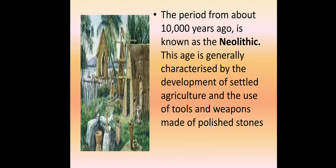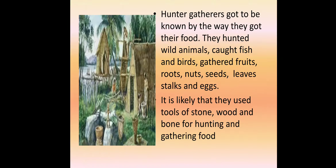The wheel was also later used for generating water. Development was taking place during the Neolithic period, and we can say this was the most advanced period. Hunter-gatherers got their food by hunting wild animals, catching fish and birds, and gathering fruits, roots, nuts, seeds, leaves, stalks, and eggs. They likely used tools of stone, wood, and bone.